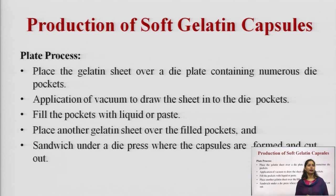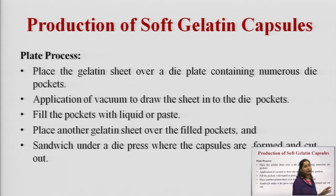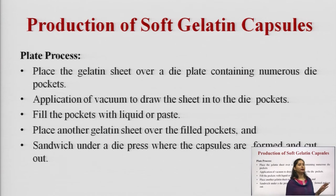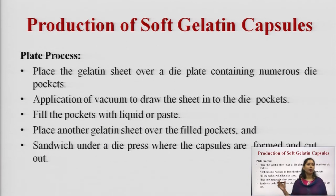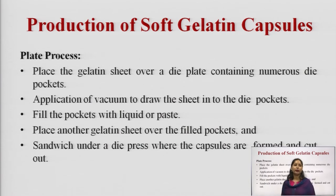Soft gelatin capsules can be prepared by the plate process, the rotary die process, the reciprocating die process, or the Accogel process. In the plate process: place a gelatin sheet over a die plate containing numerous die pockets, apply vacuum to draw the sheet into the die pockets, then fill the pockets with liquid or paste. Place another gelatin sheet over the filled pockets and sandwich under a die press where the capsules are formed and cut out.